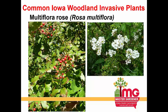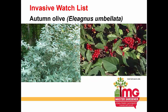Multiflora rose has clusters of white flowers in late spring/early summer that develop into red hips birds spread widely. Thorny stems make it difficult to remove, but like other woody invasives it requires repeated grubbing out and/or herbicide treatments. The remaining plants — autumn olive, bittersweet, Japanese barberry, Norway maple, tree of heaven, burning bush, and porcelain berry — are on the invasive watch list, not yet officially declared invasive in Iowa but invasive in other parts of the country, so we should be aware and possibly avoid planting them.